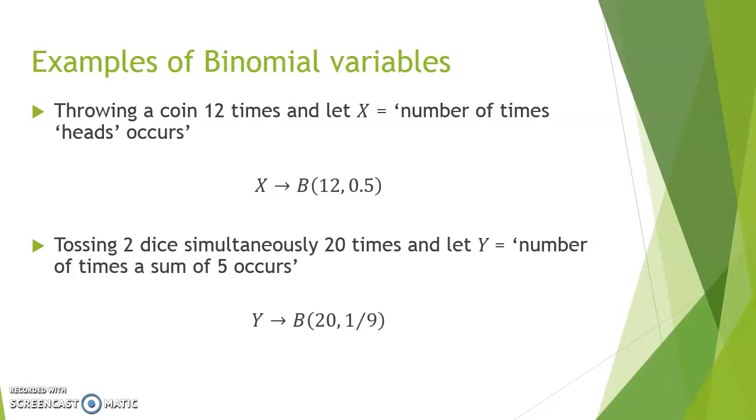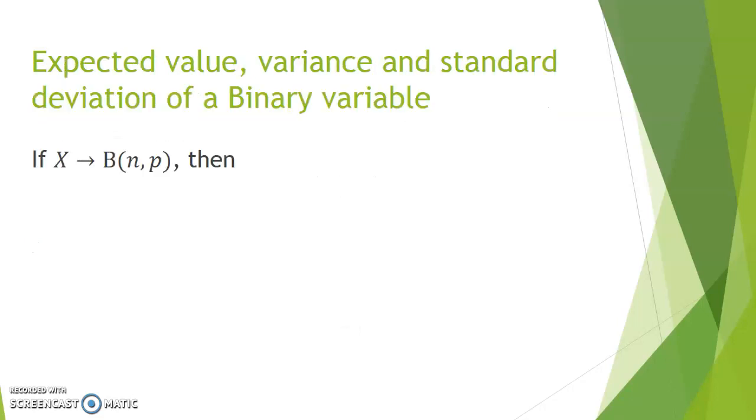In terms of the expected value, the variance, and the standard deviation for a binomial variable, we have formulas to guide us. n times p is what we would expect as the number of successes we would observe. The variance is n times p times 1 minus p, and the standard deviation is the root of the variance.